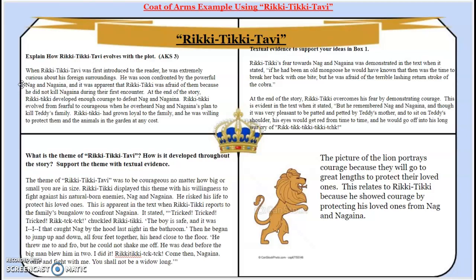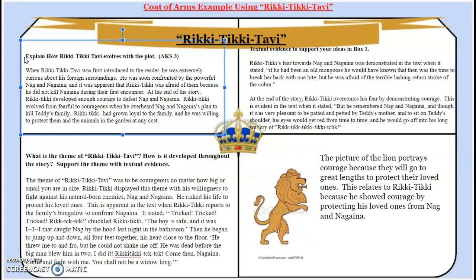For our assignment, we are also explaining how Young Arthur evolves with the plot. For this example, it's how Rikki-Tikki evolves with the plot. It says: when Rikki-Tikki-Tabby was first introduced to the reader, he was extremely curious about his foreign surroundings. He was soon confronted by the powerful Nag and Nagaina, and it was apparent that Rikki-Tikki was afraid of them because he did not kill Nagaina during their first encounter. At the end of the story, Rikki-Tikki developed enough courage to defeat Nag and Nagaina. Rikki-Tikki evolved from fearful to courageous when he overheard Nag and Nagaina's plan to kill Teddy's family. Rikki-Tikki had grown loyal to the family, and he was willing to protect them and the animals in the garden at any cost.